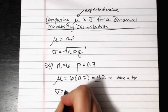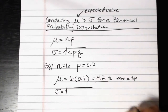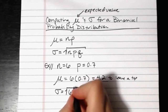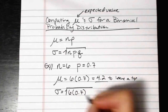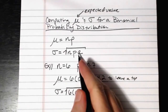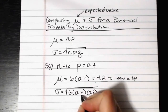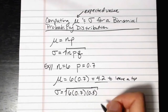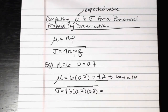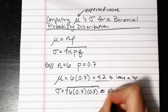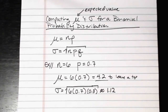The standard deviation is equal to the square root of n times p times q. Our n is 6, p is 0.7, which makes q — the probability of failure — equal to 0.3, since 1 minus 0.7 equals 0.3. You plug that right into the calculator: square root of 6 times 0.7 times 0.3, and you get approximately 1.12 for the standard deviation. So the expected value is 4.2 and the standard deviation is 1.12.